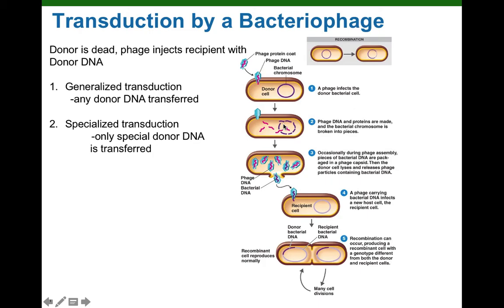Sometimes a little piece of donor DNA won't be totally destroyed. Once phage proteins have been made and phage DNA has been copied, the phage proteins self-assemble into those little heads — those capsids — and they package little pieces of DNA from the cytoplasm into the phage heads, and then the tail assembles. Most of these newly replicated phage are carrying phage DNA, but by accident, a piece of donor bacterial DNA got packaged into this one little phage head.